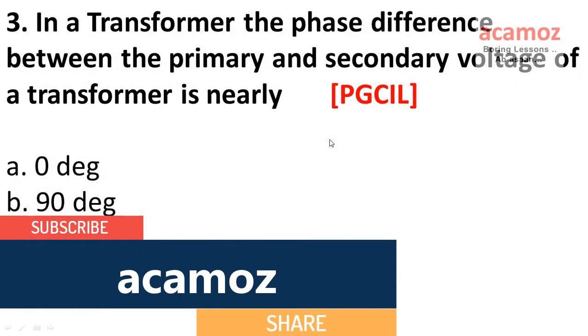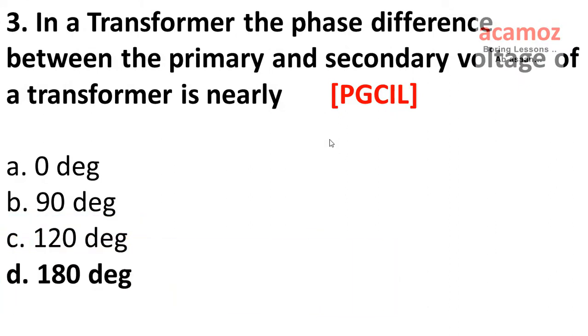Third question: In a transformer, the phase difference between the primary and secondary voltage of a transformer is nearly? The answer is 180 degrees.